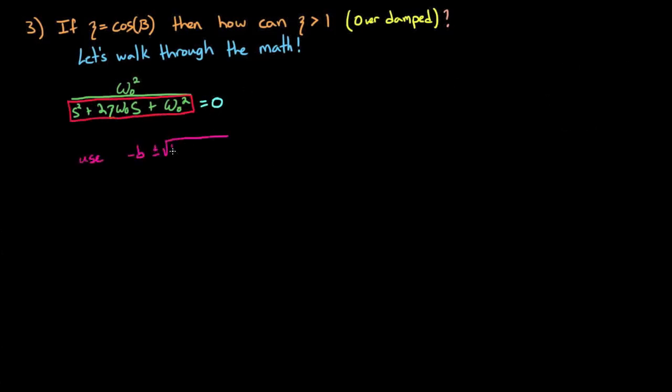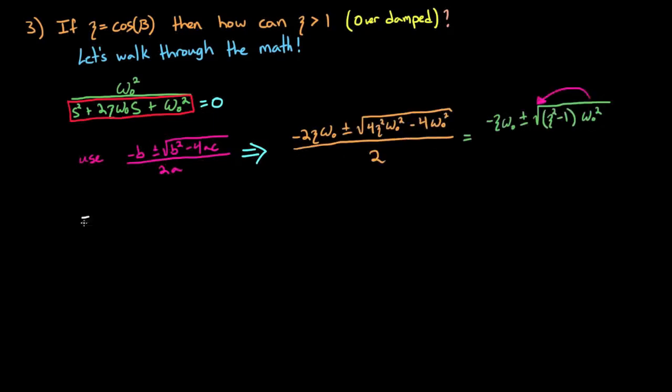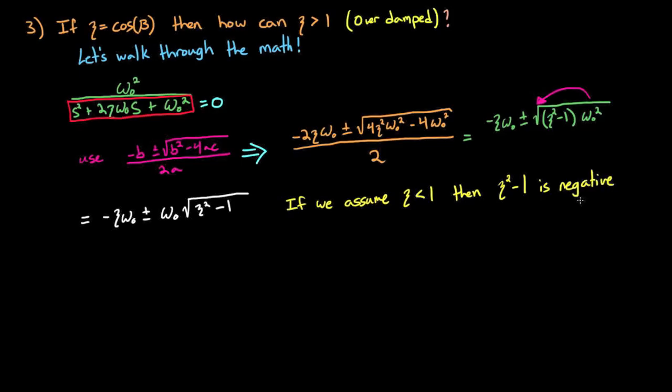I'll plug in the a, b, and c, and then simplify the equation down to this one that I've written in white. You can pause the video at this point if you want to check the work and let it sink in a bit. But at this point we can make an assumption that ζ is less than 1. If that's the case, then ζ squared minus 1 is negative and causes the term under the square root to be imaginary. I find it's easier to factor out the minus 1 explicitly and then pull the imaginary term j out just so we can see the real and imaginary components clearly.